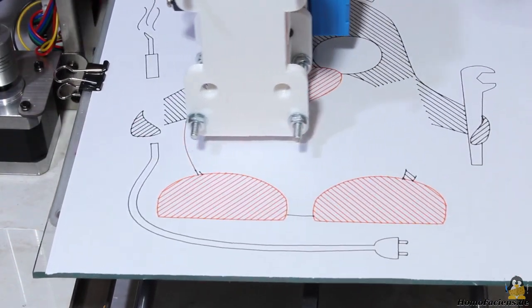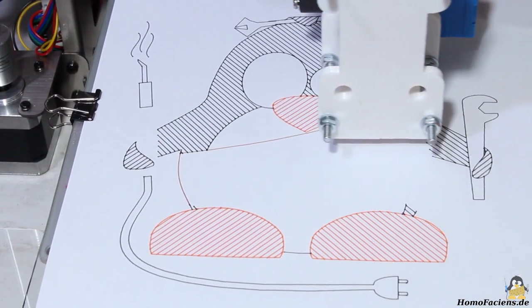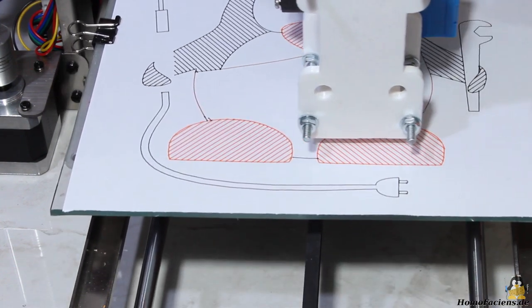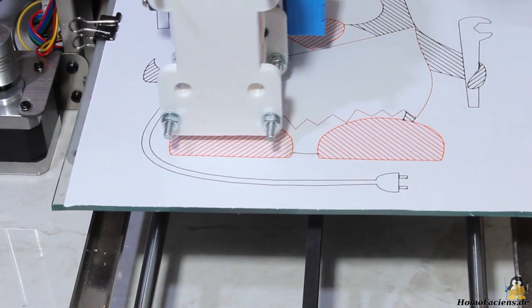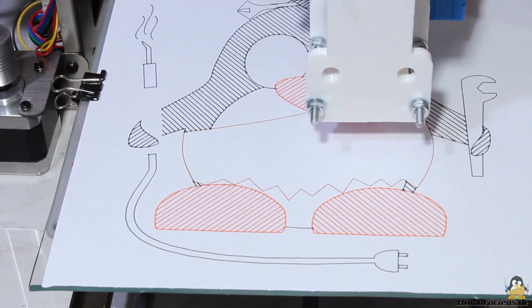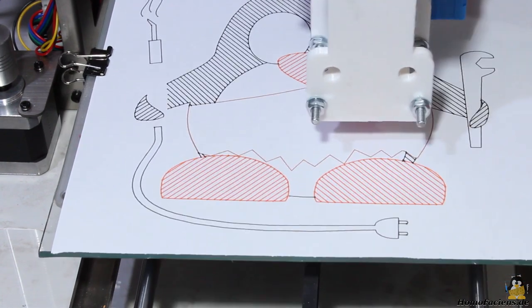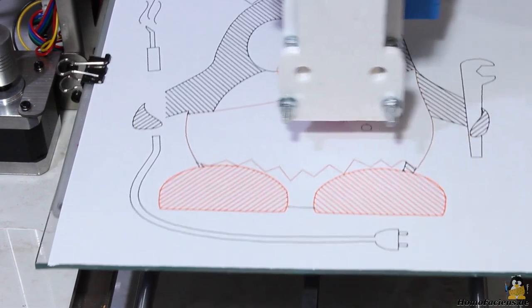My Perl script ignores filled areas. Only lines and outlines are transformed into G-code commands. Even with the cheapest inkjet printer you get better graphics on a piece of paper. This plotter is more an educational tool than a machine that plots your photos.